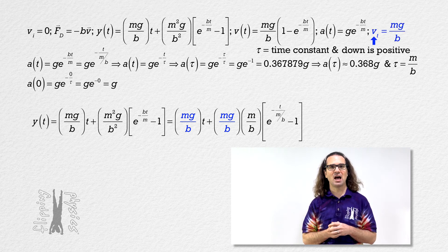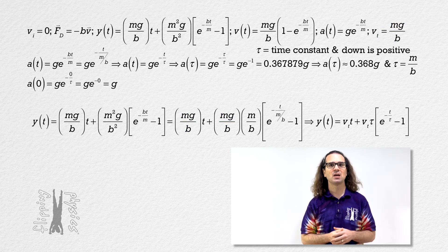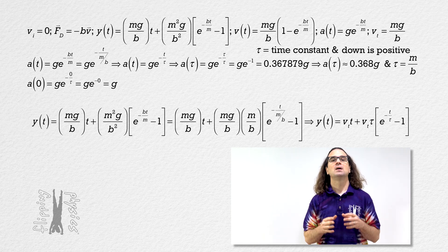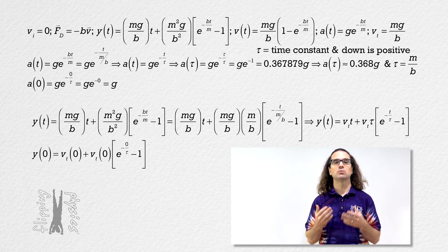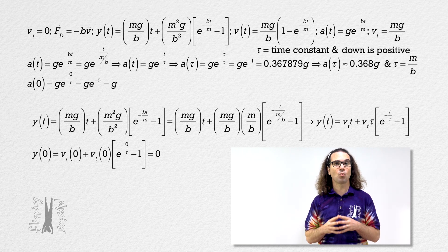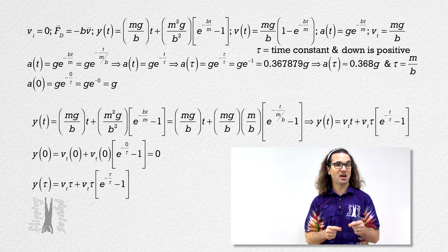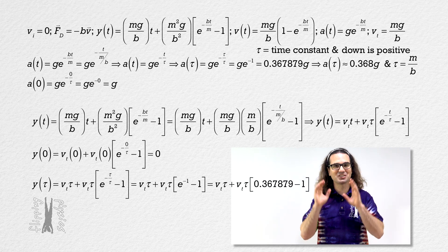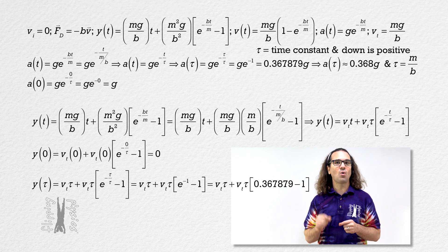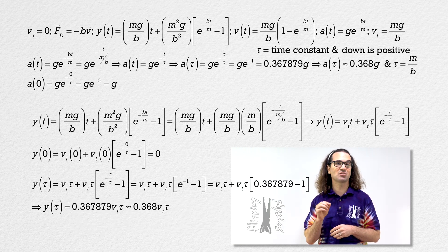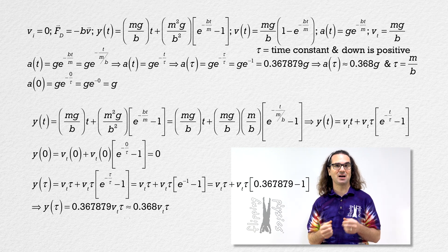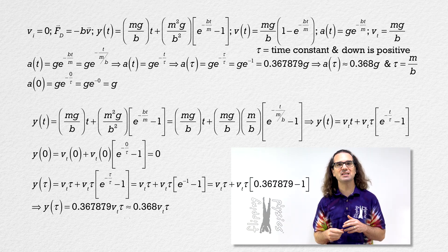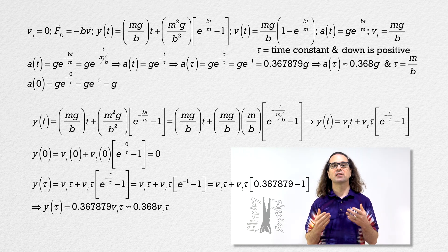We get that the y position as a function of time of the ball equals terminal velocity times time plus terminal velocity times time constant times the quantity e to the power negative time over time constant minus 1. At time equals 0, the initial position of the ball equals 0. We can also determine the y position of the ball after one time constant. Time constant over time constant equals 1, and e to the power negative 1 equals 0.367879. That means the y position of the ball after one time constant equals roughly 0.368 times terminal velocity times the time constant. While this does not have the same shape as the velocity and acceleration, there are some similarities which are easiest to see when we look at the graphs of these functions, starting with velocity.